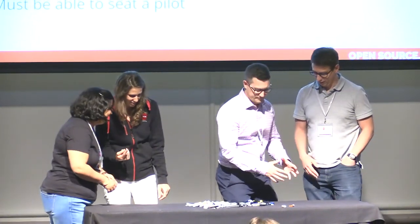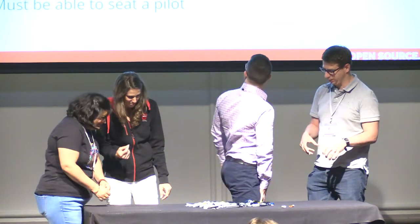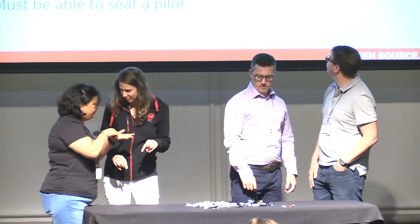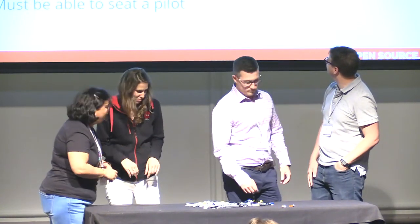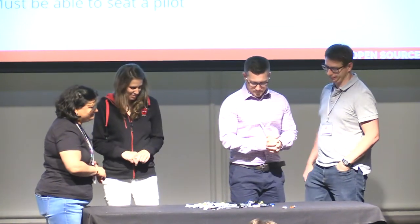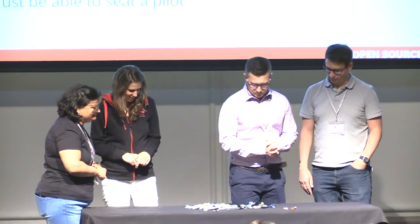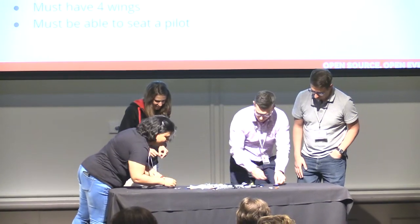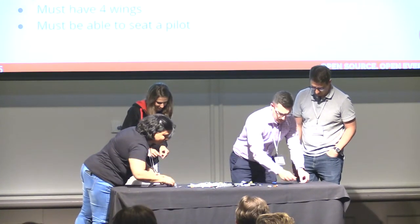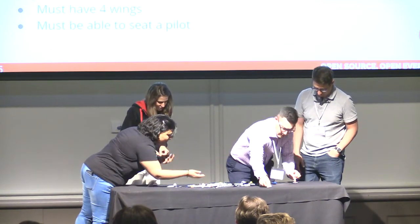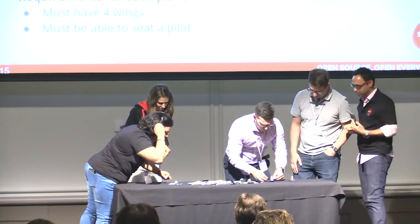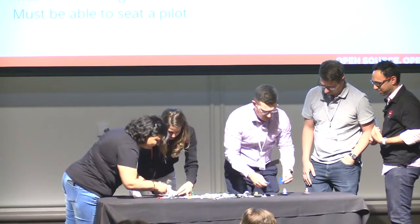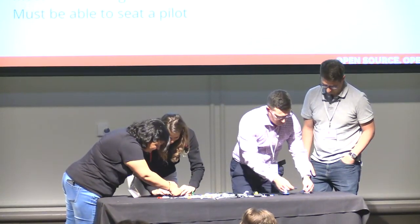You've got a 15-second planning sprint — you can't touch the pieces. Then the 30-second build sprint begins. During the exercise I'll give a clue: the four wings means two normal wings and two rear wings.